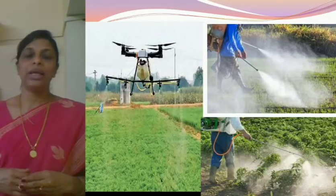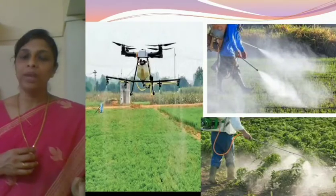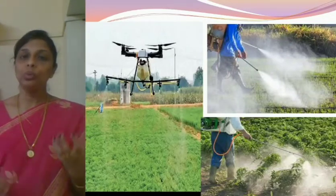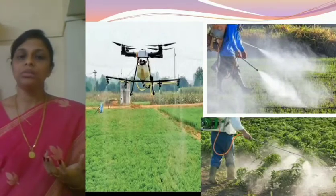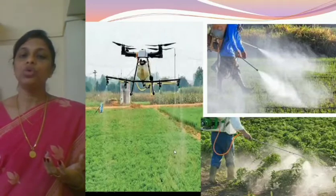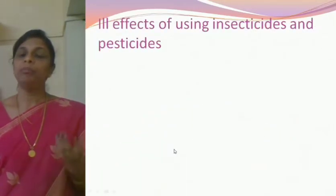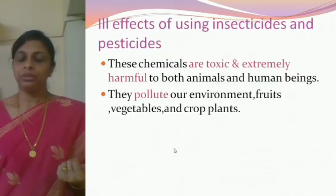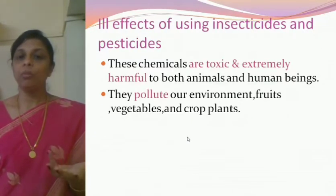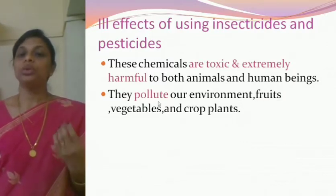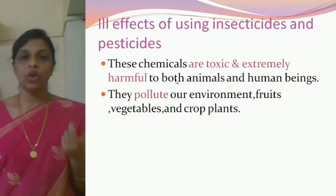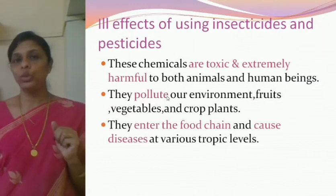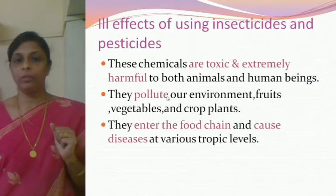Not only that, insecticides and pesticides also pollute the crop plants, vegetables and fruits. So the first ill effect is they are toxic, and the second one is they pollute the environment.